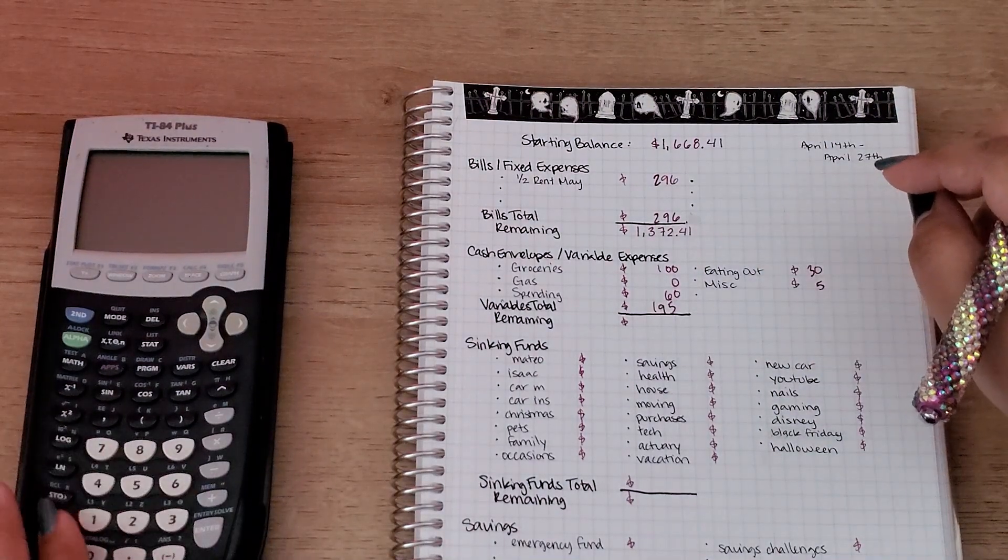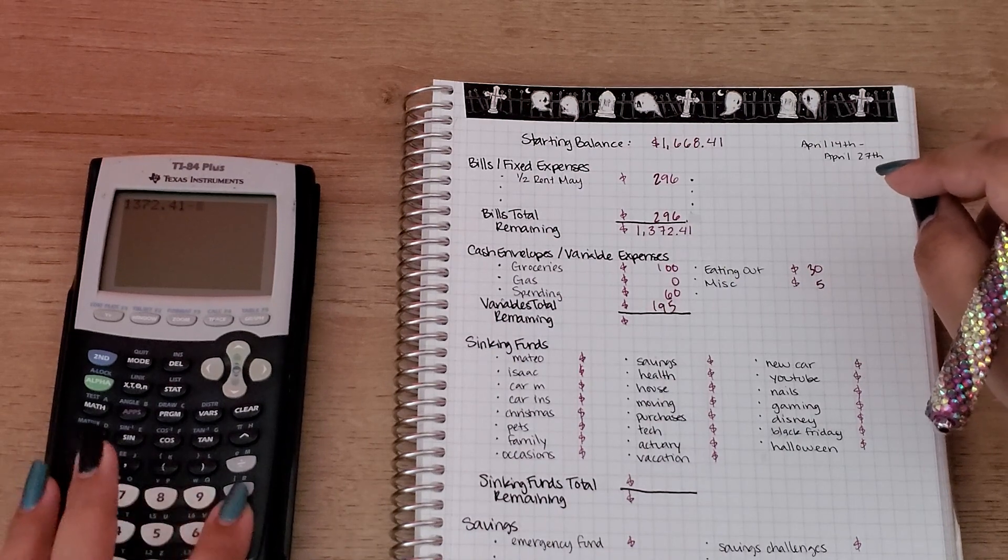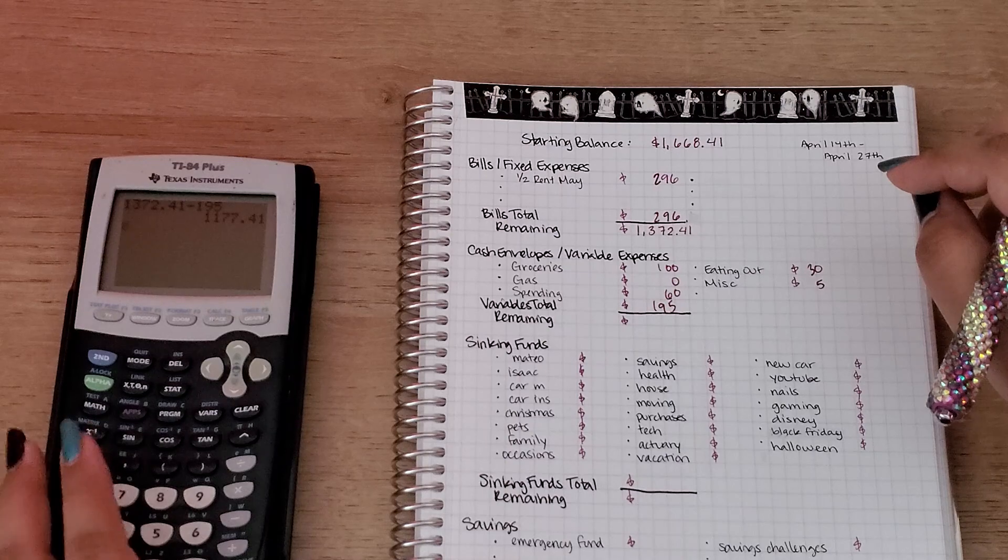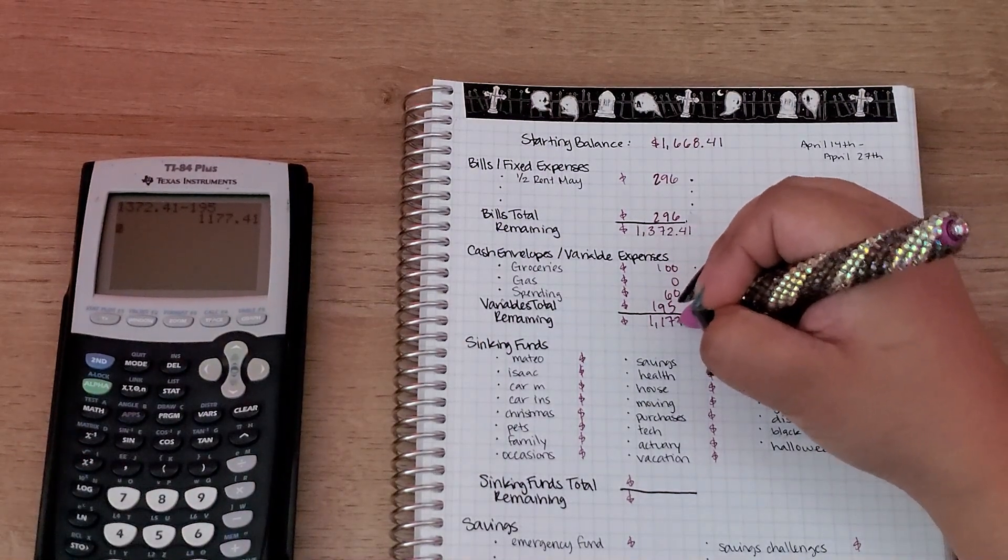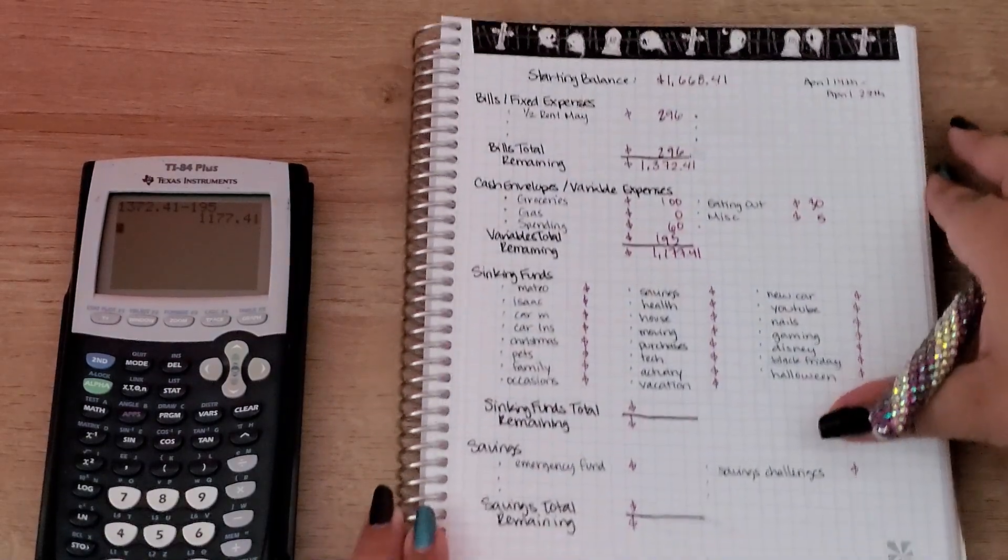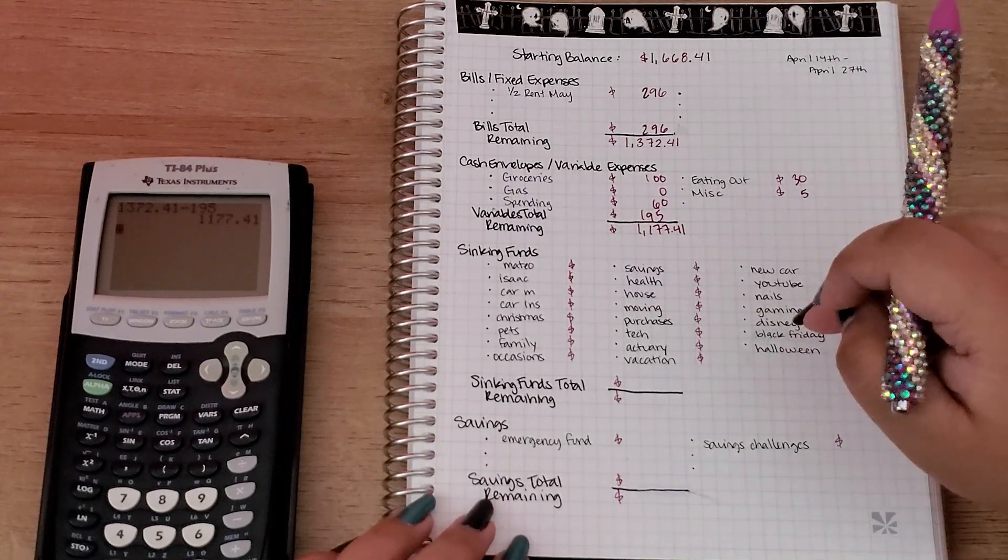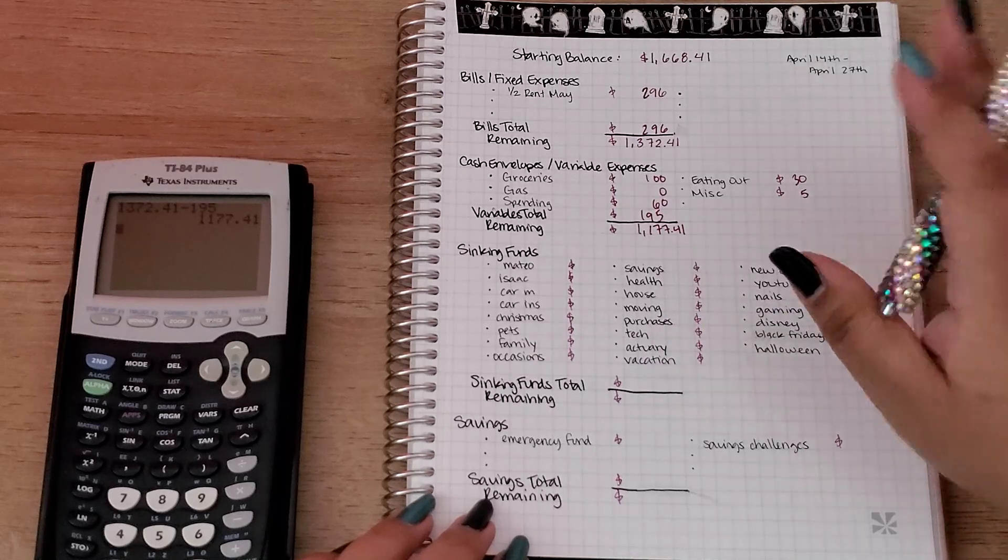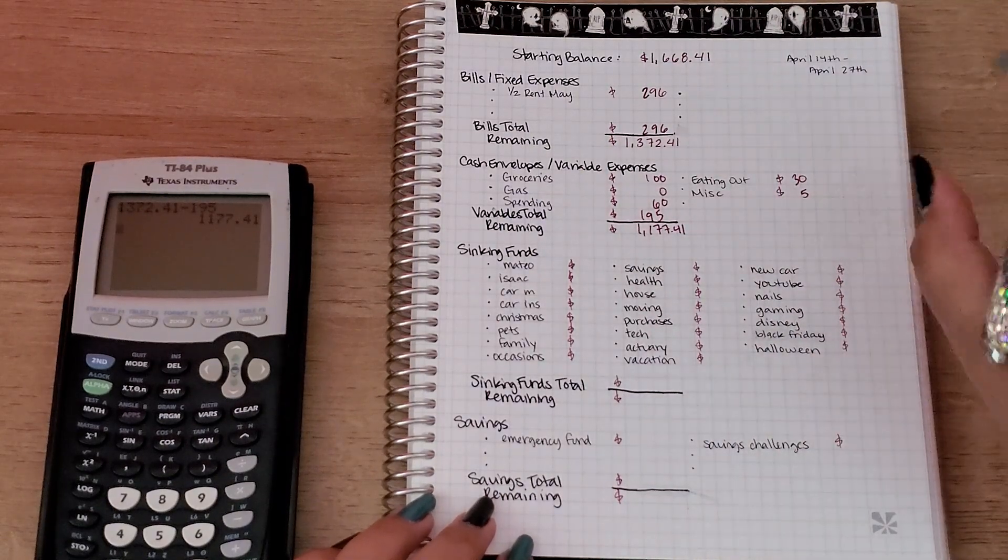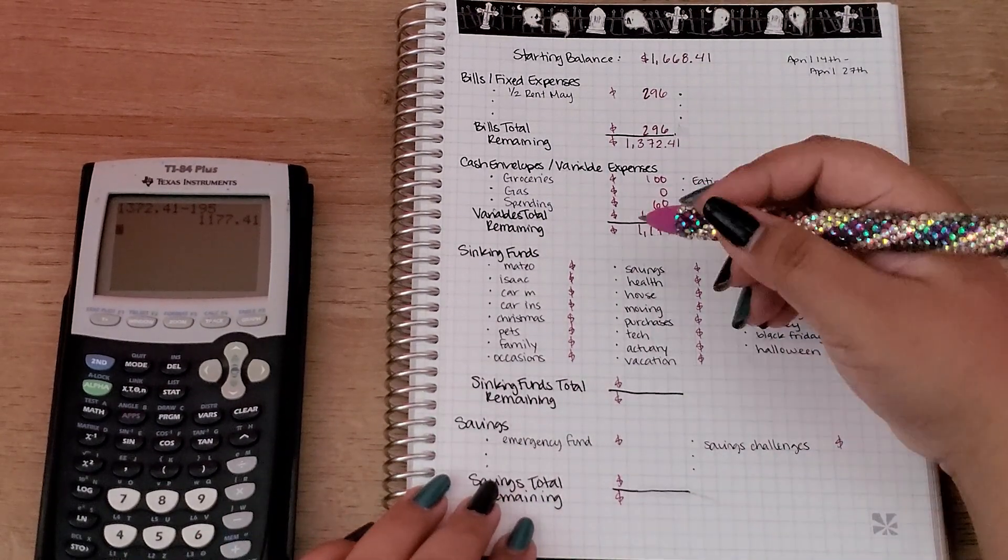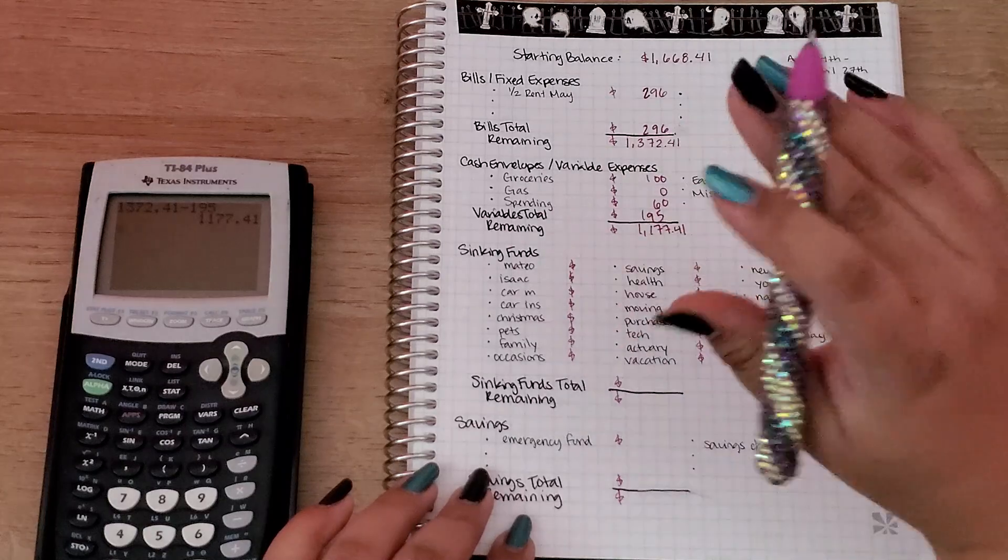Let's do the math, so $1,372.41 minus $195. Okay, so that's that. Now we're going to move into my sinking funds. As you can see, I have one less because I took out investments from here. I'll be continuing that once I fully fund my emergency fund. So as of right now, I'm not doing any investments besides the ones that automatically come out of my paycheck for my 401k.